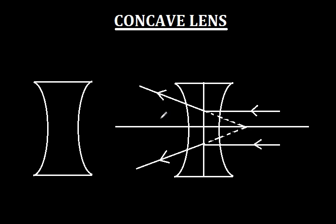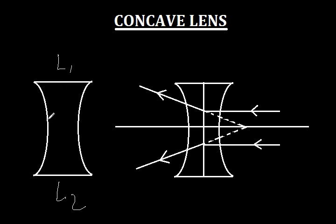A convex lens has thinner edges and a thicker mid portion, but a concave lens has a thinner mid portion and thicker edges. So if the mid portion of a lens is thinner and the edges are thicker, then it is called a concave lens.